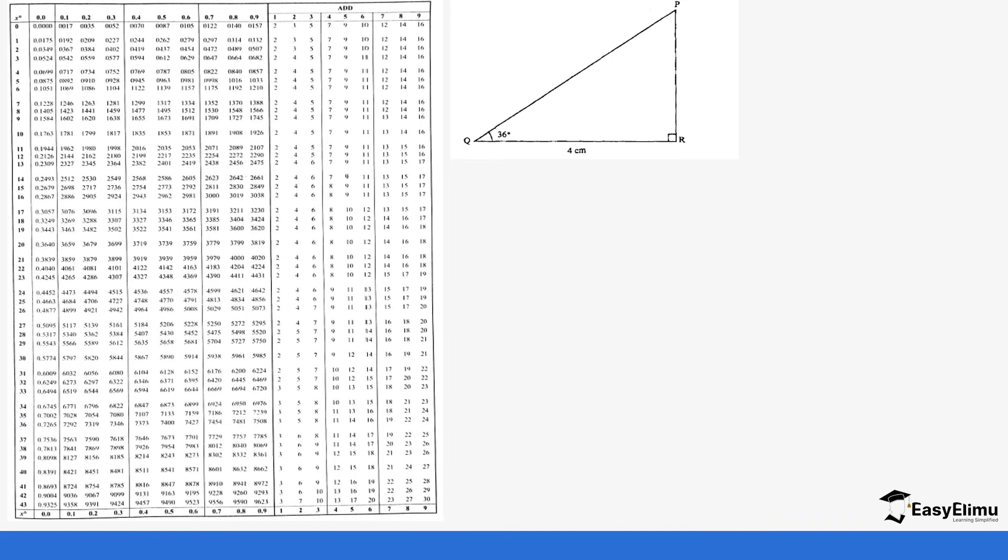Let's do another example. Now you have been told to look for the value of PR. So PR is going to be tan 36 equals PR over four centimeters or QR, then times four both sides which is going to give us four times tan 36 equals PR.